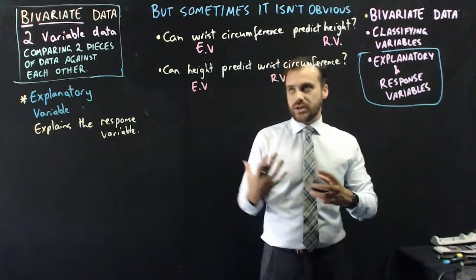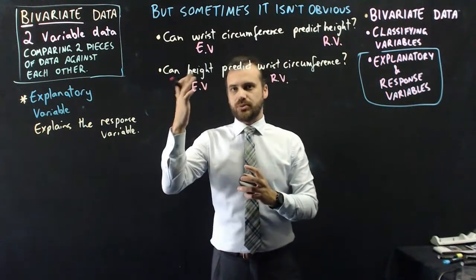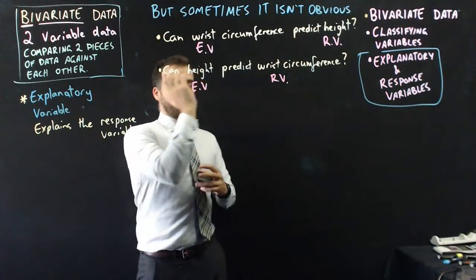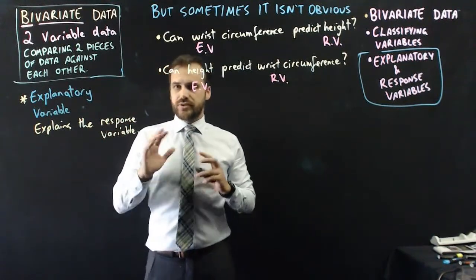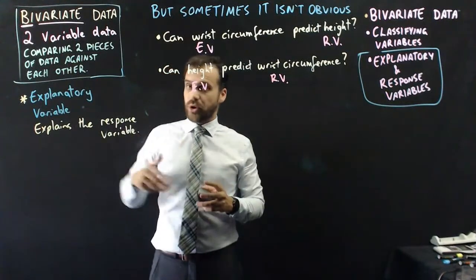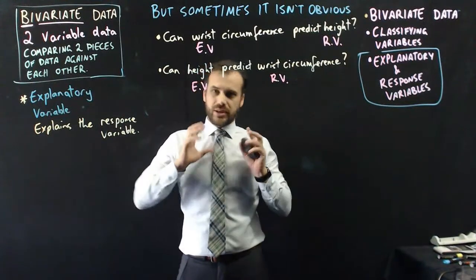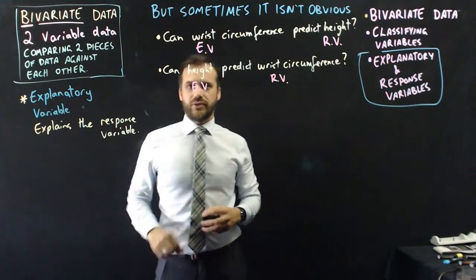So when you're doing statistical stuff, the question you ask can determine which is the explanatory one and which is the response one. It's covered a lot of ground there. We looked at bivariate data - what is it? We looked at a quick classification of data, and then we did three different types of bivariate data, three different types of ways to compare data. And then the important thing: explanatory variable and response variable.